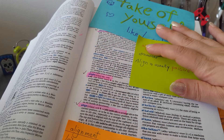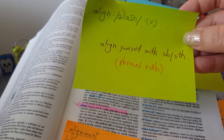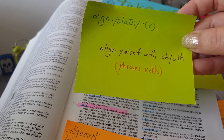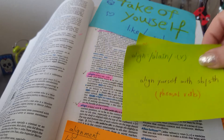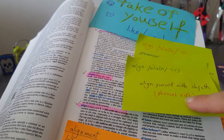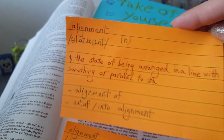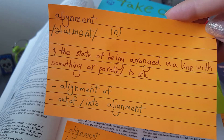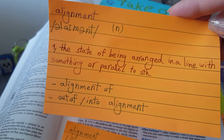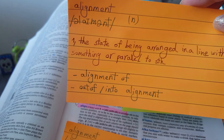Verb phrase: align yourself with somebody or something. Phrase, a verb. Guys, please comment below. Noun, related word: alignment. The state of being arranged in line with something, or parallel to something. Alignment: out of, into. That's amazing.